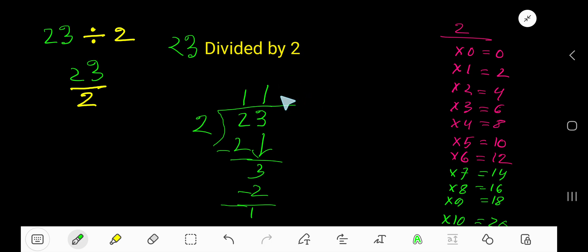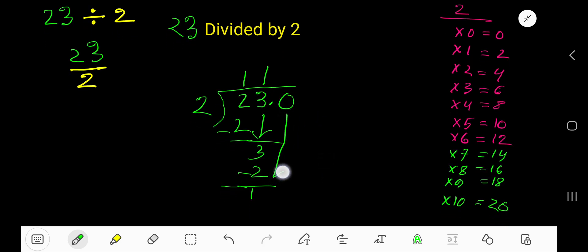Or, if you want to convert your answer into decimal, then take a decimal point, then you are allowed to take any number of zeros. Bring down the first zero, then 10. 2 goes into 10 how many times? 5 times. So before the zero there is a decimal, so decimal must come to the question.